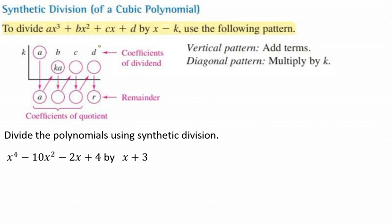Here, you take the coefficients of the dividend, which is these pieces right here, and you're going to perform this pattern. So you bring a down, and then every time you go diagonally, you multiply by k. And then vertically, you're always adding. So everything you do is adding vertically, and everything diagonal is multiplying. This is our remainder, and this piece right here is going to be our coefficient of our quotient.